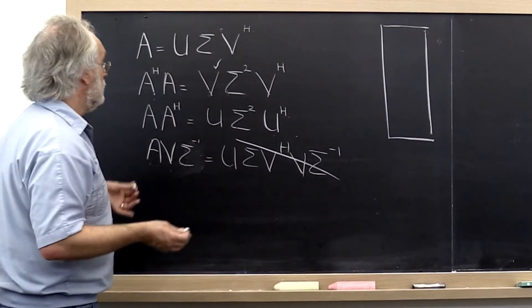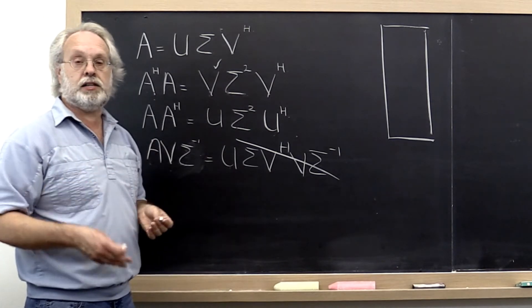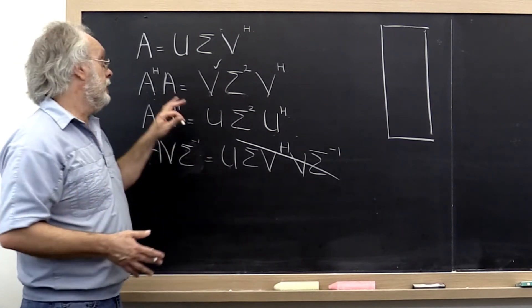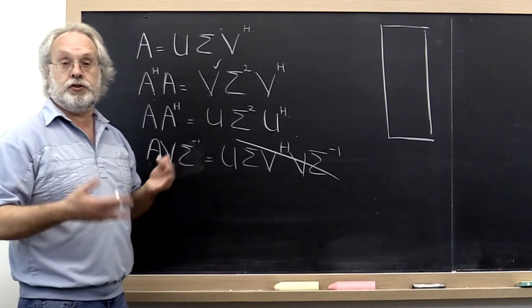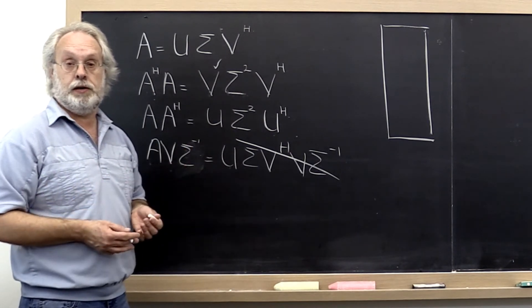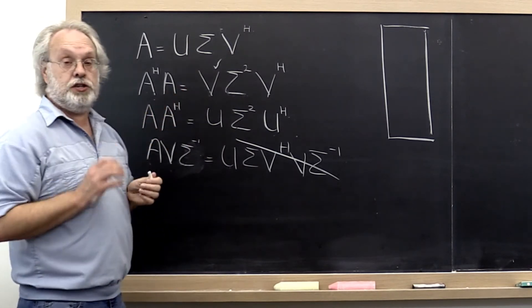Now it turns out that the condition number of the matrix also impacts how relative error in the matrix gets amplified into the accuracy of the eigenvalues and eigenvectors that are computed. So that's a conditioning problem.